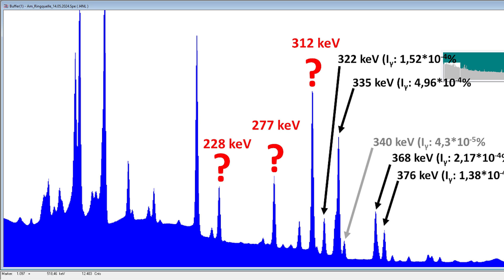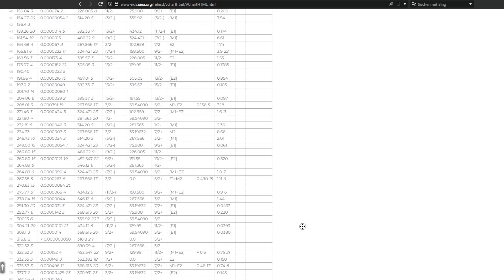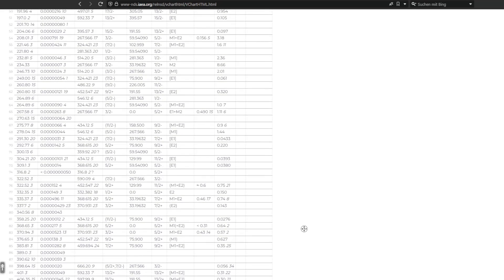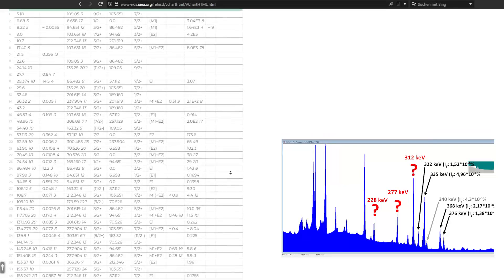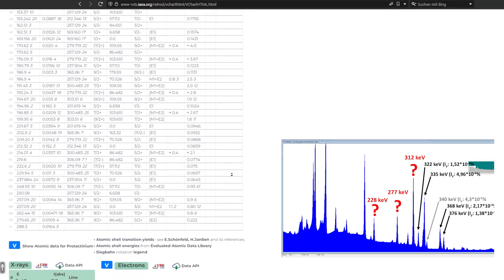The 277 is undoubtedly a peak. Emissions from americium-241 are impossible, they are too far away, and even if, the occurrence probabilities were far too low for this height. So, let's look further, could it be neptunium-237 lines? No, it doesn't match the energy. Well, what else could there be?